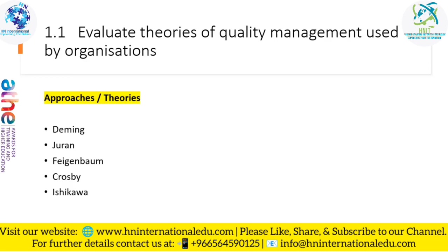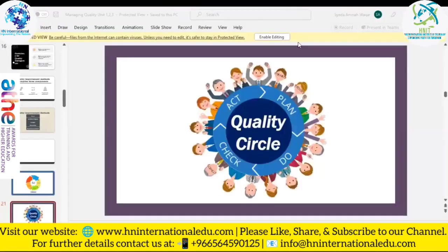To illustrate this, Deming created a diagram commonly known as the PDCA cycle, which we also discussed in the previous lecture. P stands for Plan, D for Do, C for Check, and A for Act.